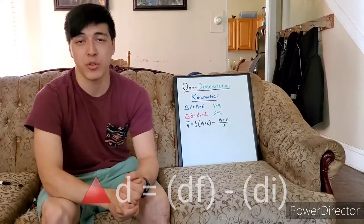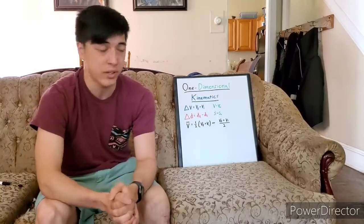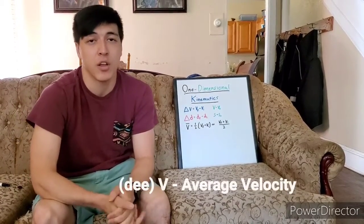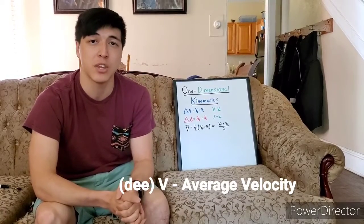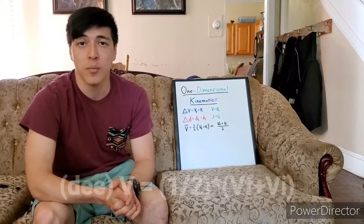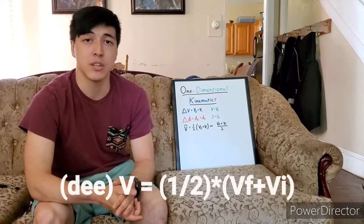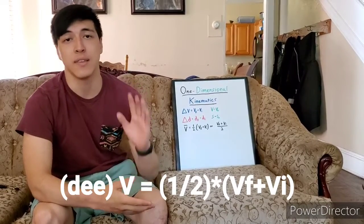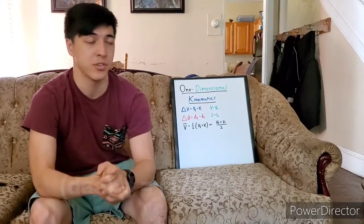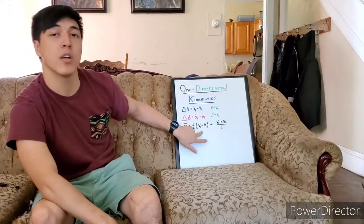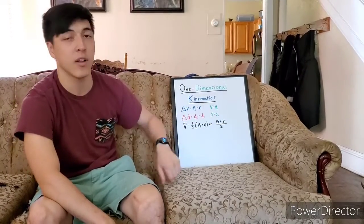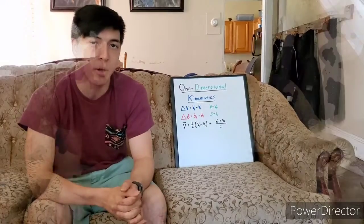Our last term before we break down these equations is DV, which basically means average velocity. To find the average of something, you add it up and divide by how many terms you've added up. For average velocity, we are looking for the final velocity plus the initial velocity divided by 2 — which can be written as one-half times (final velocity plus initial velocity).